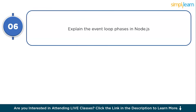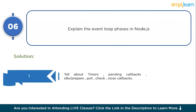Question 6: explain the event loop phases in Node.js. The phases are: Timers (executes setTimeout and setInterval callbacks), Pending Callbacks (executes deferred I/O callbacks), Idle/Prepare (internal operations), Poll (retrieves new I/O events), Check (executes setImmediate callbacks), and Close Callbacks (executes cleanup tasks like socket.on). Explain each phase with examples in your interview answer.